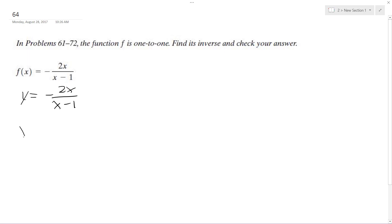So we're going to get x is equal to negative 2y over y minus 1. So we get x quantity y minus 1 is equal to negative 2y. Then what I'm going to do is distribute the x.